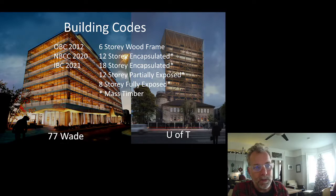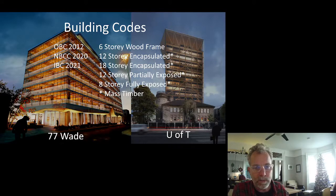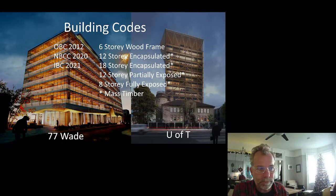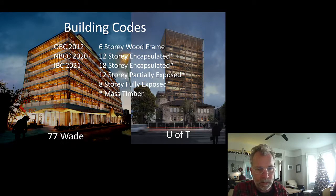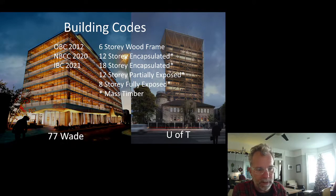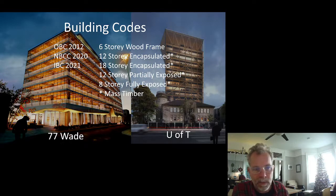These are the prescriptive limits. OBC 2012 — our governing building code right now — allows six-story wood frame, not restricted to mass timber. NBC 2020 (the national building code) allows 12-story encapsulated wood. NBCC 2020 hasn't been published yet but is imminent. It'll be at least a year before Ontario adopts it, but within a year or two Ontario will allow by rights a 12-story encapsulated mass timber.